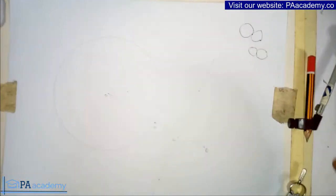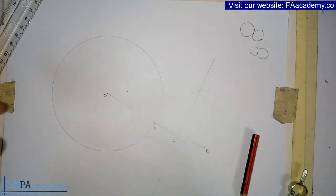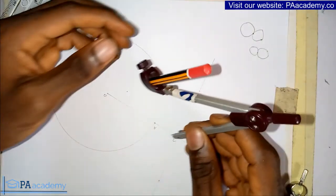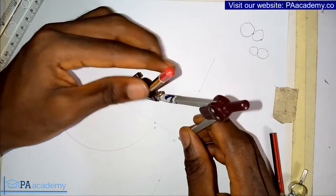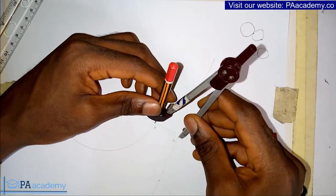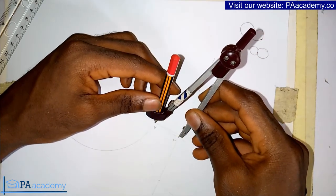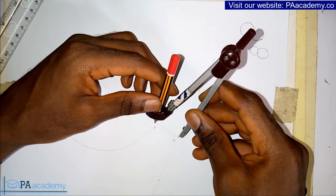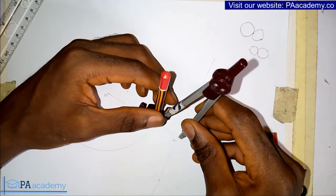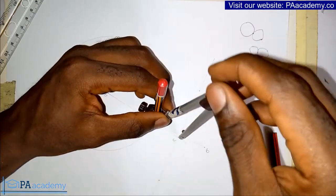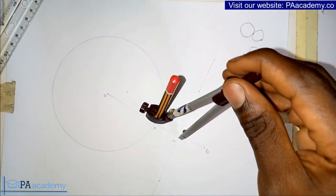Line AC is the radius of the circle we are going to draw. Now you pick your compass and place it on C, adjust it to touch point A, and having done that you'll be able to draw the circle.